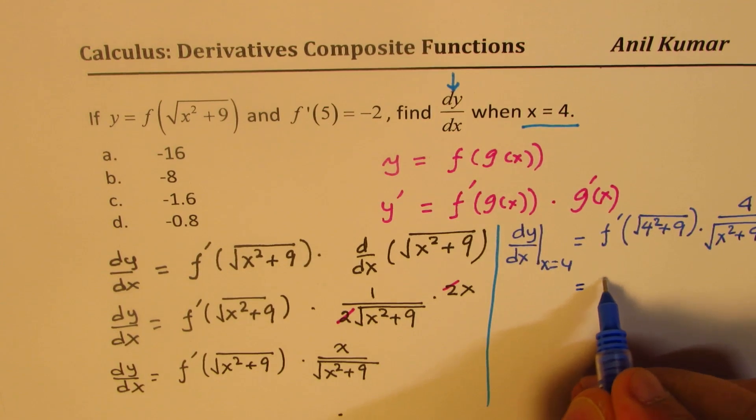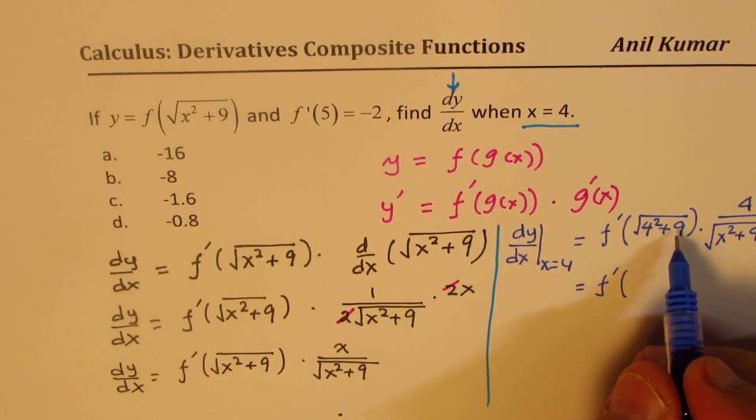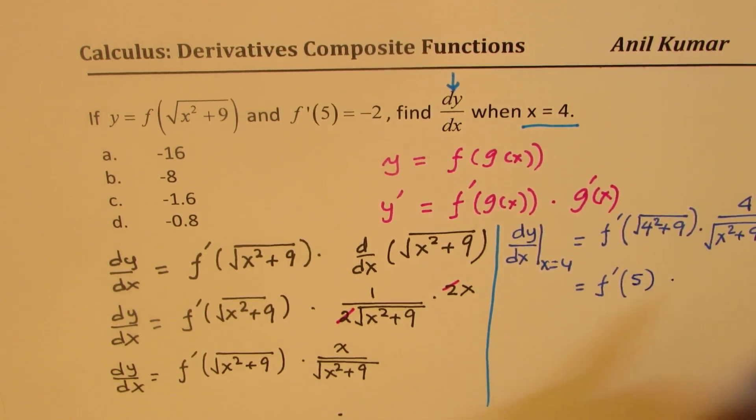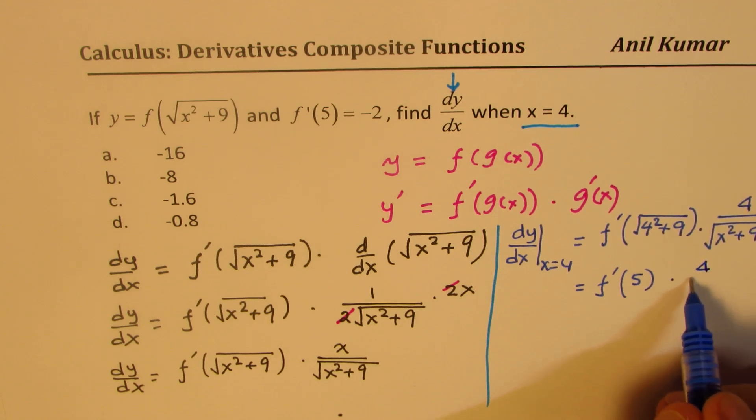So that gives you f prime of 4 squared is 16, 16 plus 9, 25, square root is 5, times 4 over 5.